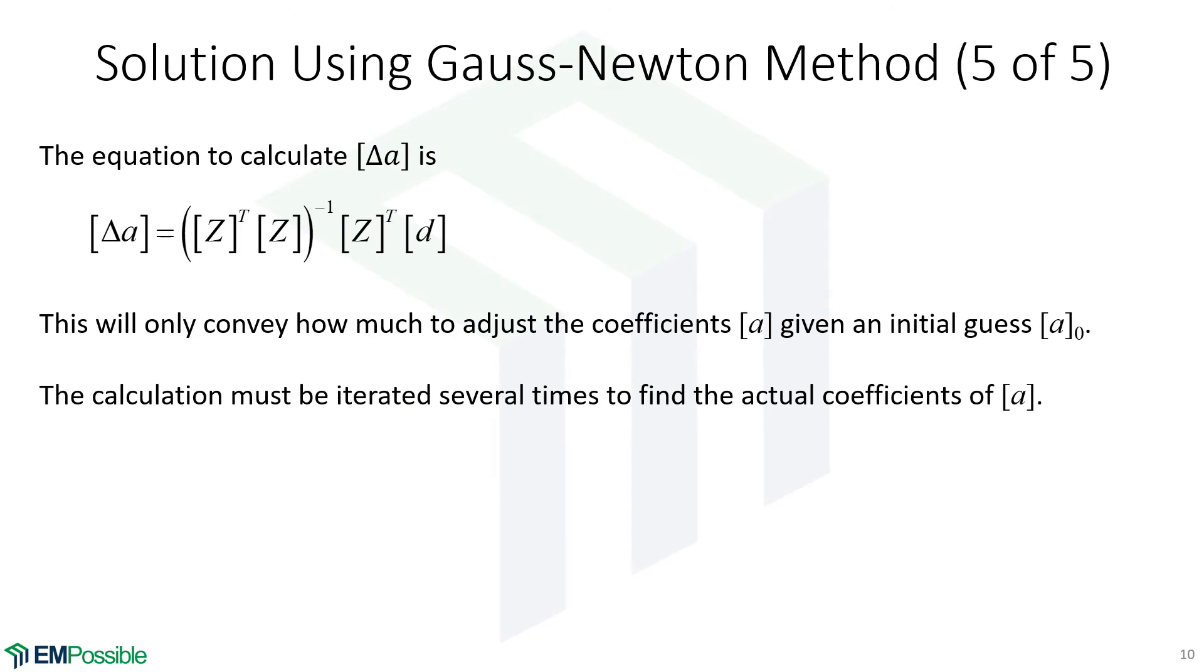So just to remind something that we keep saying, this delta A is not our curve fit parameters. That is how much to change the curve fit parameters, hopefully to improve the quality of the curve fit. So we do need some initial guess and we'll talk more about that. But we need an initial guess and we'll start the algorithm with that. Then every time we calculate a delta A, we simply add this delta A to our current values and we get a new set of coefficients that we then go into our next iteration with.